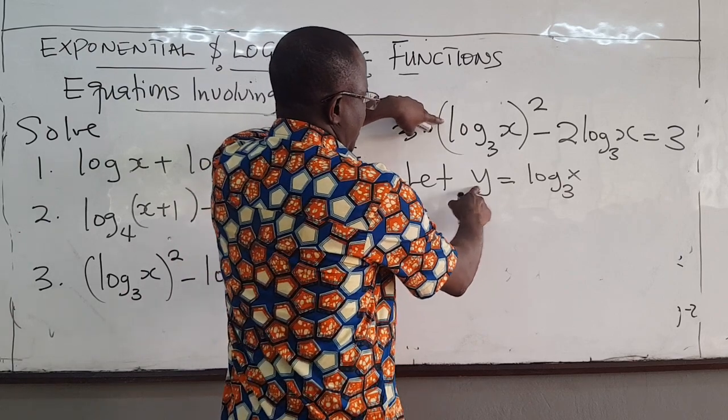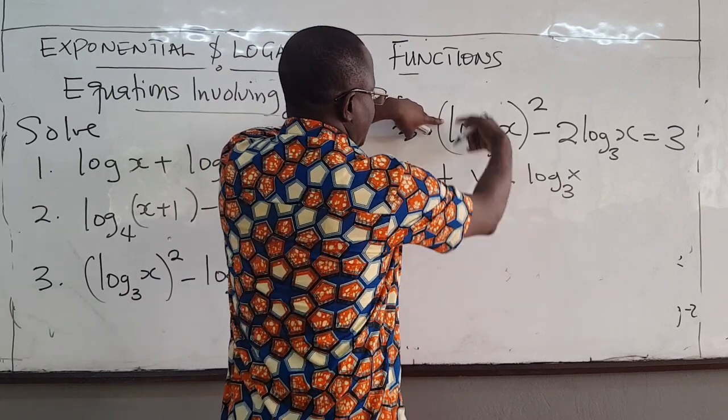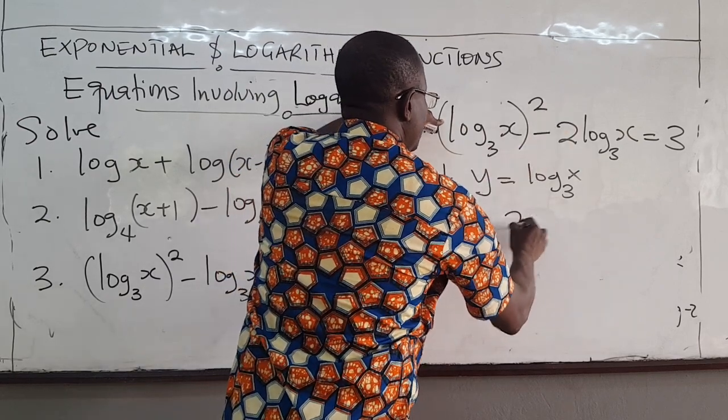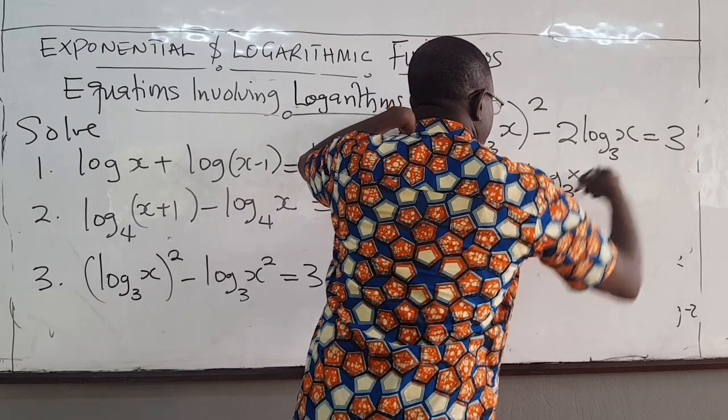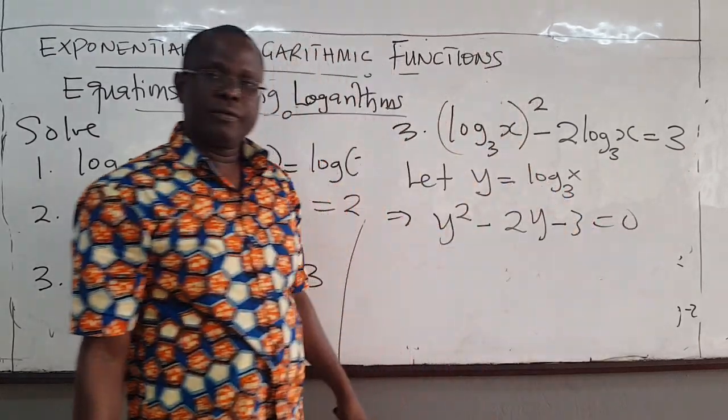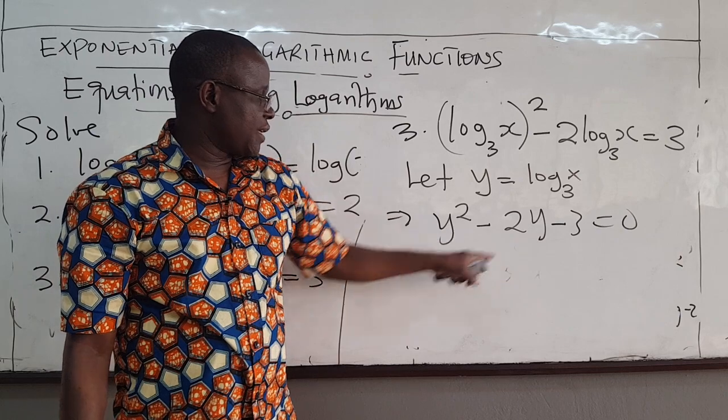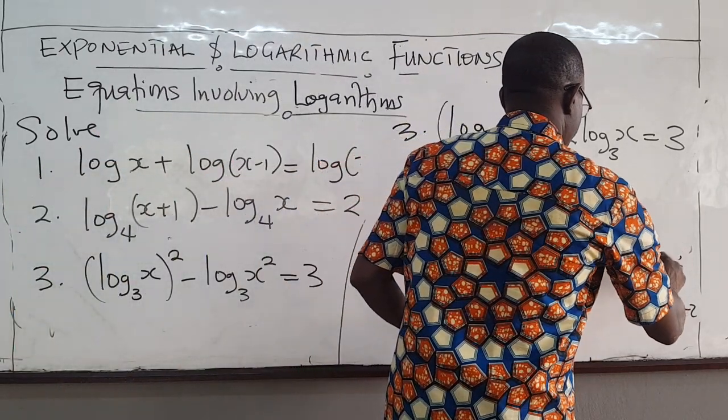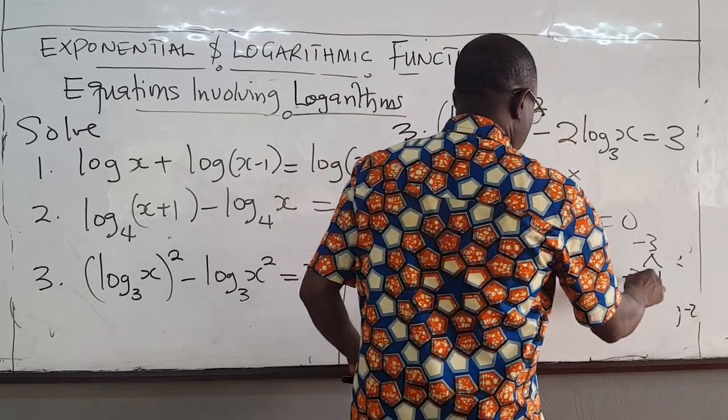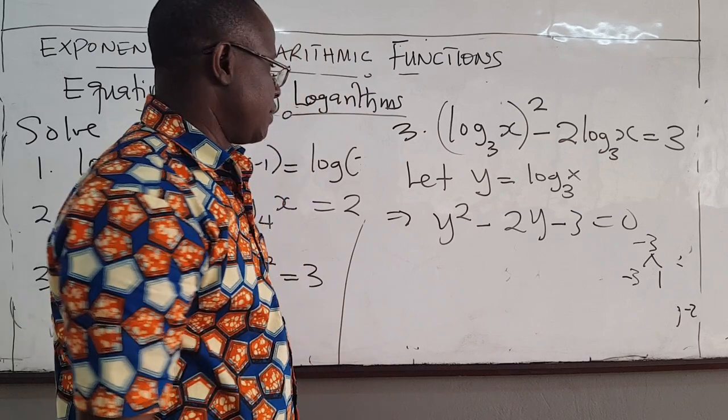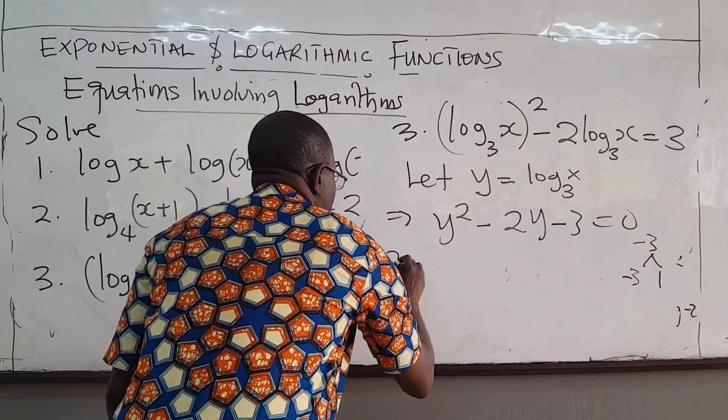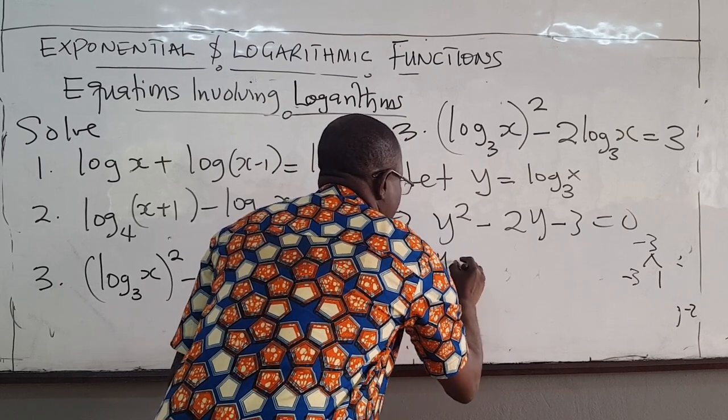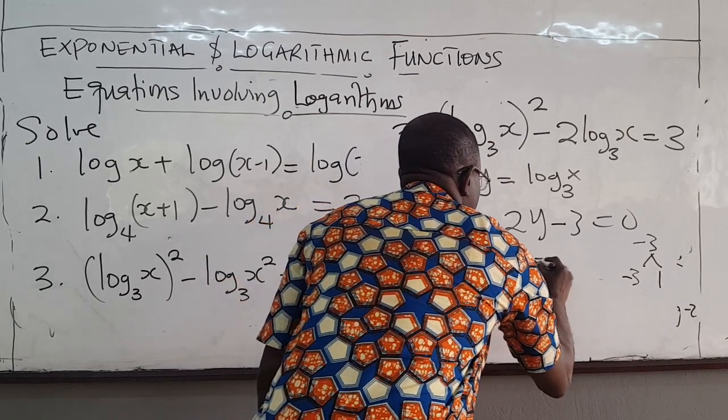If y is this, then this guy will be y squared. This is y squared minus 2y. I bring this here, I get negative 3, equals 0. So you solve this as a quadratic. I have negative 3, that would be negative 3 and 1. So I have y squared minus 3y plus y minus 3.